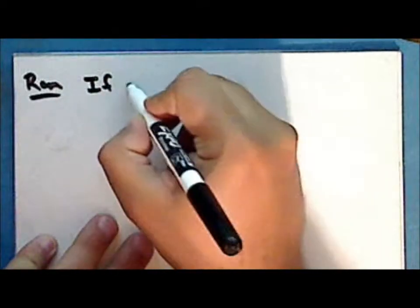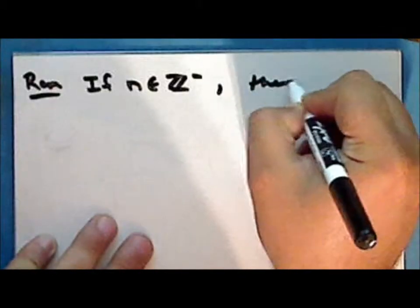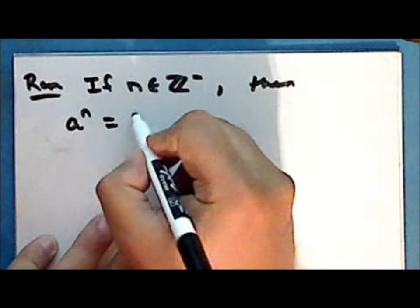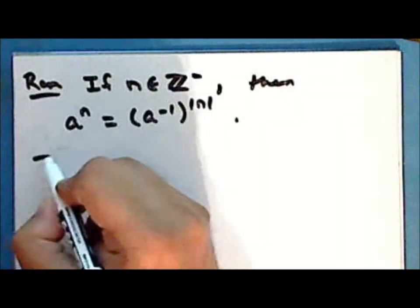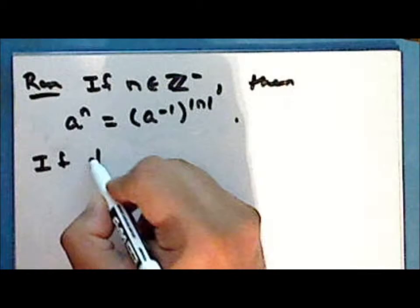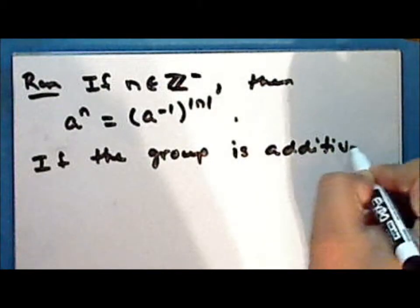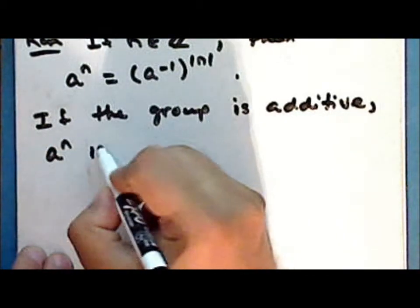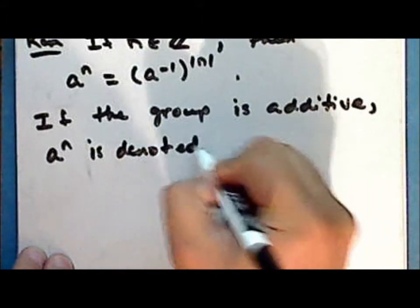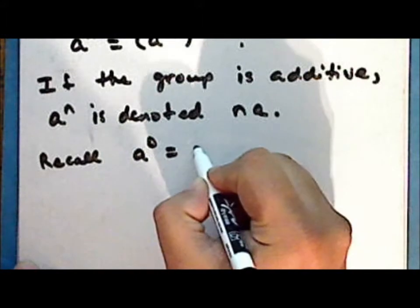Now if the integer n is a negative integer, then the notation A to the power of n is the inverse of A to the power of the absolute value of n. And if the group is additive, the notation A to the power of n is denoted n times A. And of course recall that A to the power of 0 is the identity.